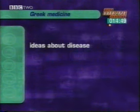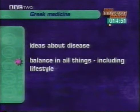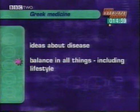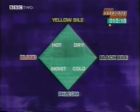Greek thinkers emphasised the idea of balance in all things. In medicine, this included a balanced lifestyle — eating in moderation, taking some exercise, sleeping regularly and keeping clean. A person's health was believed to be affected by the proportions of four humours inside each human being: yellow bile, black bile, phlegm and blood. It was thought that an imbalance in any of these caused illness. One of the ways doctors came up with to restore the balance was bloodletting.